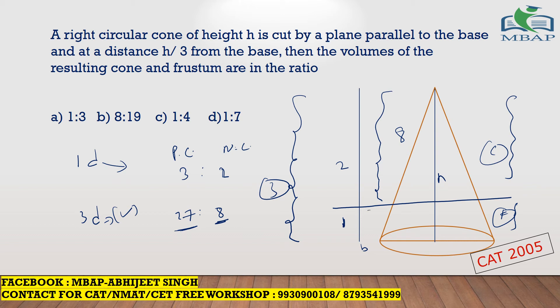Now for the frustum: if the total original cone volume is 27 and the smaller cone on top is 8, then the frustum volume is 27 minus 8, which is 19. So the ratio of the smaller cone to the frustum is 8 to 19. The answer is 8 to 19, the only value where the additional part makes up to 27. Again, just ratio and percentage change.